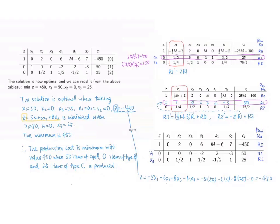Therefore, the production cost is minimum with a minimum value of 450 when 50 items of type A, 0 items of type B, and 25 items of type C paper is produced. We can see that in this final solution, we have a1 equals 0, and this is reasonable.